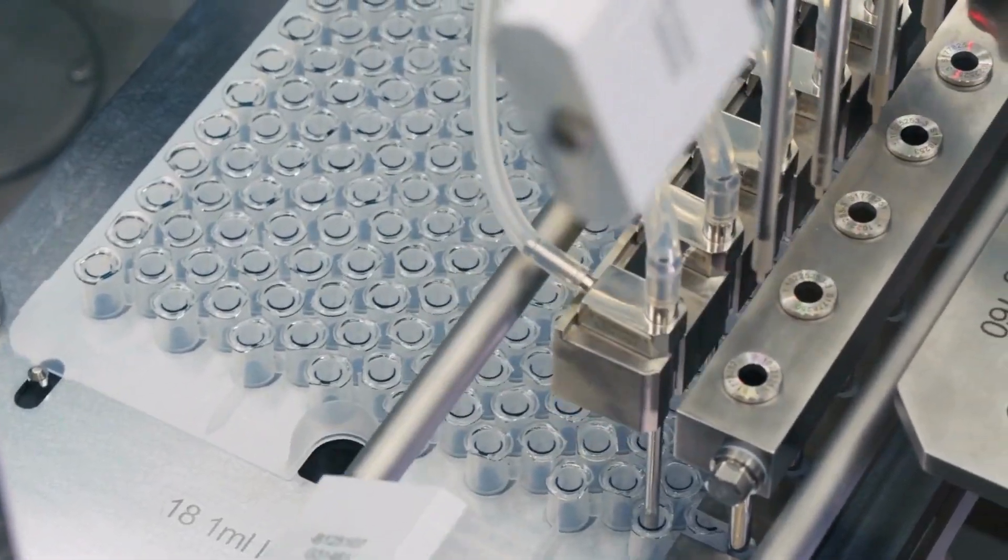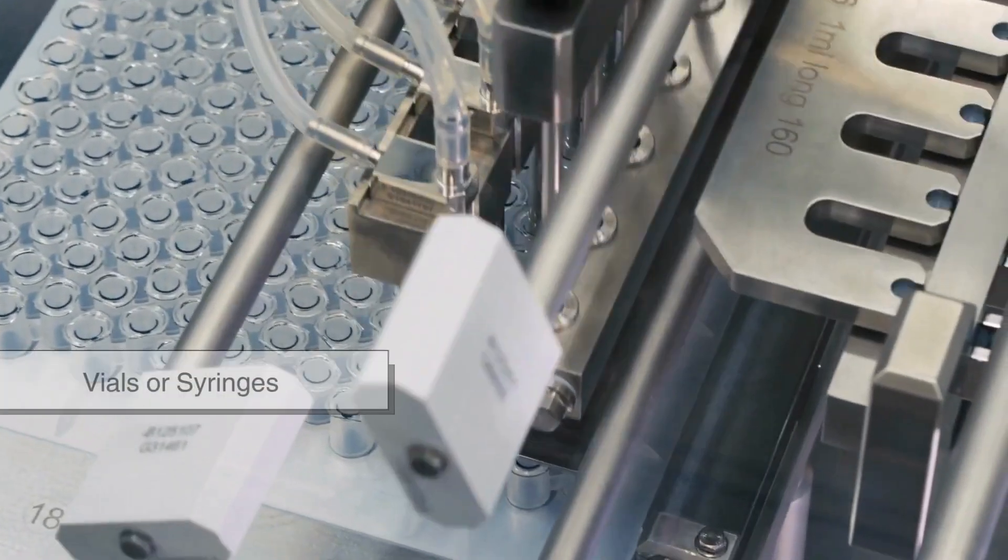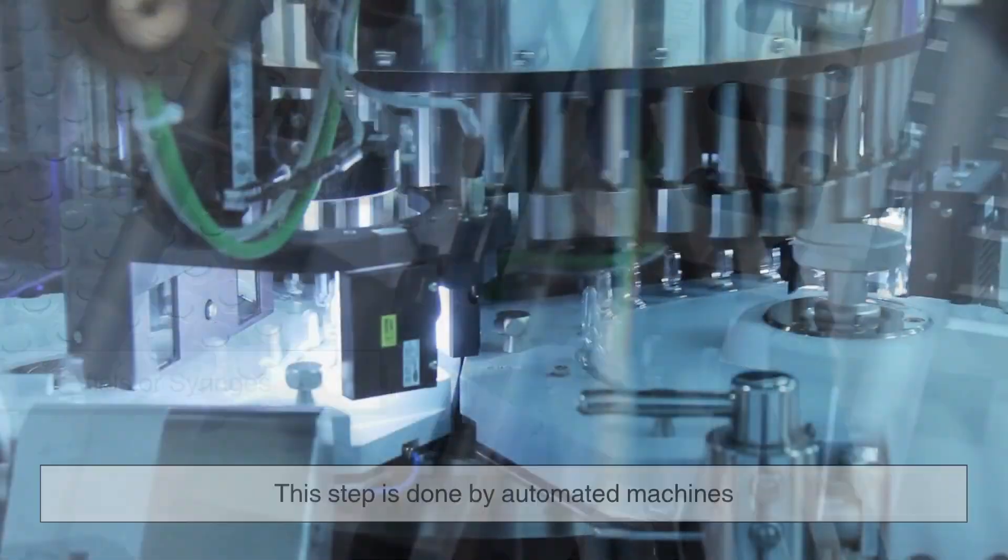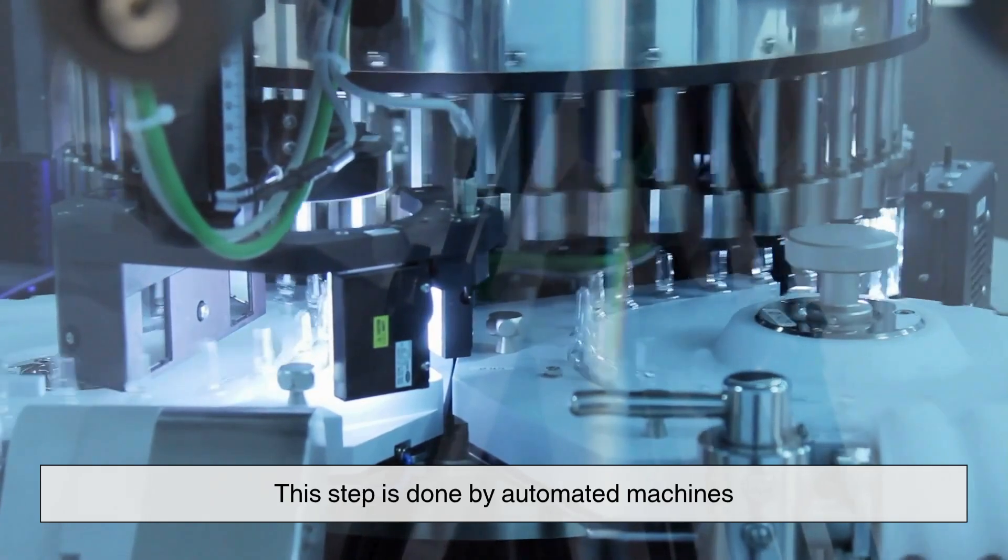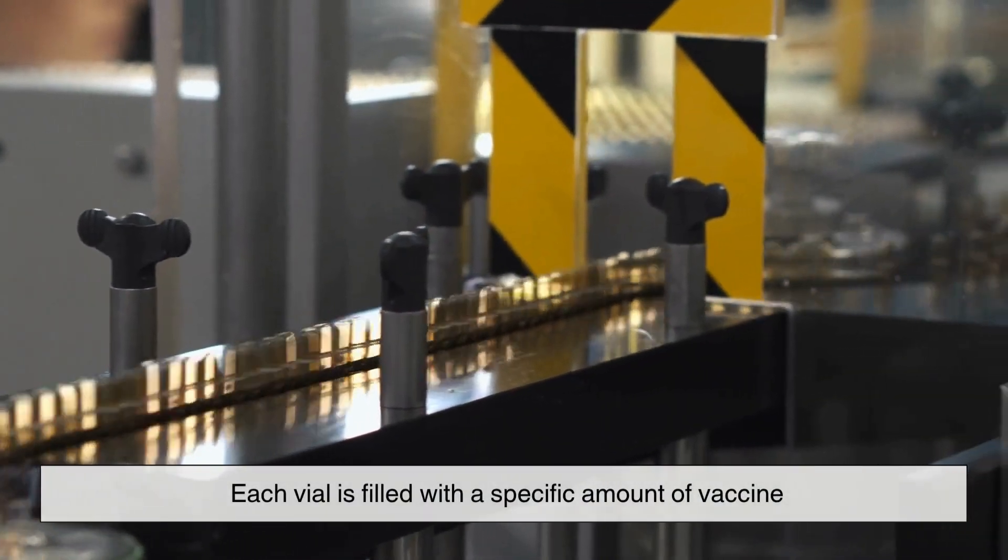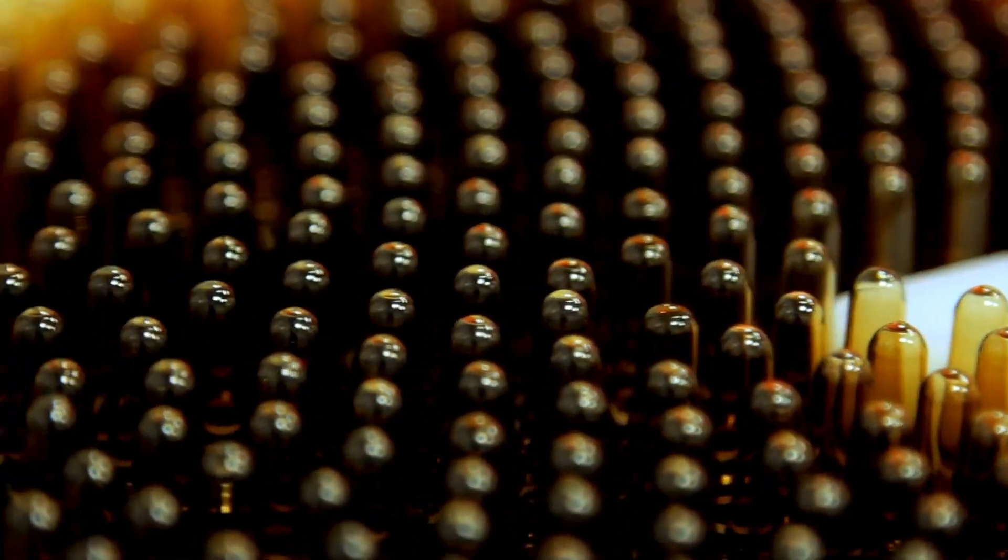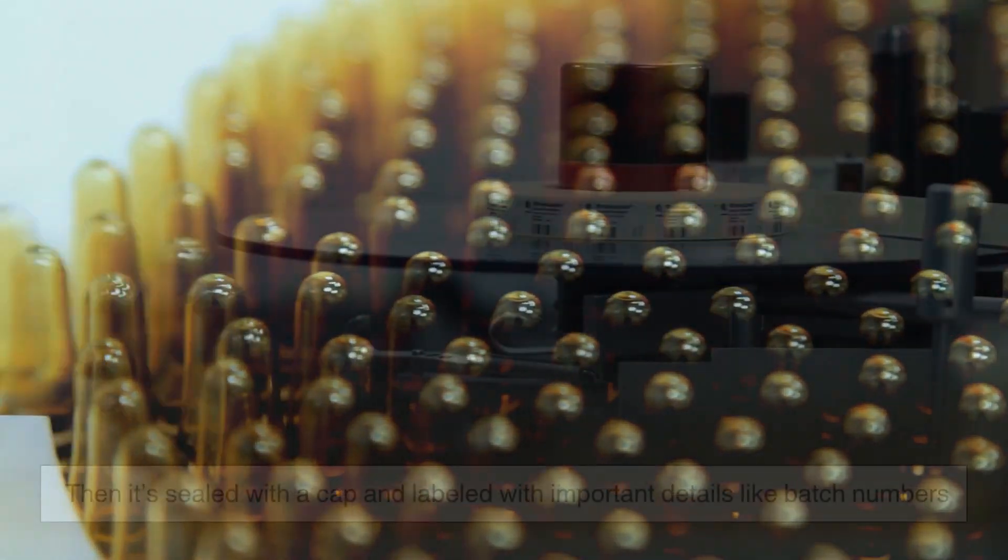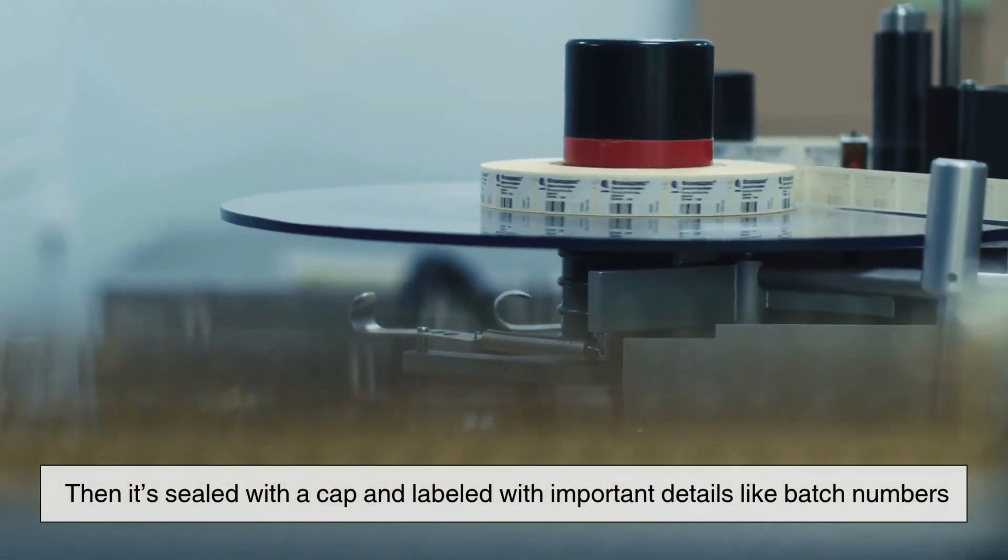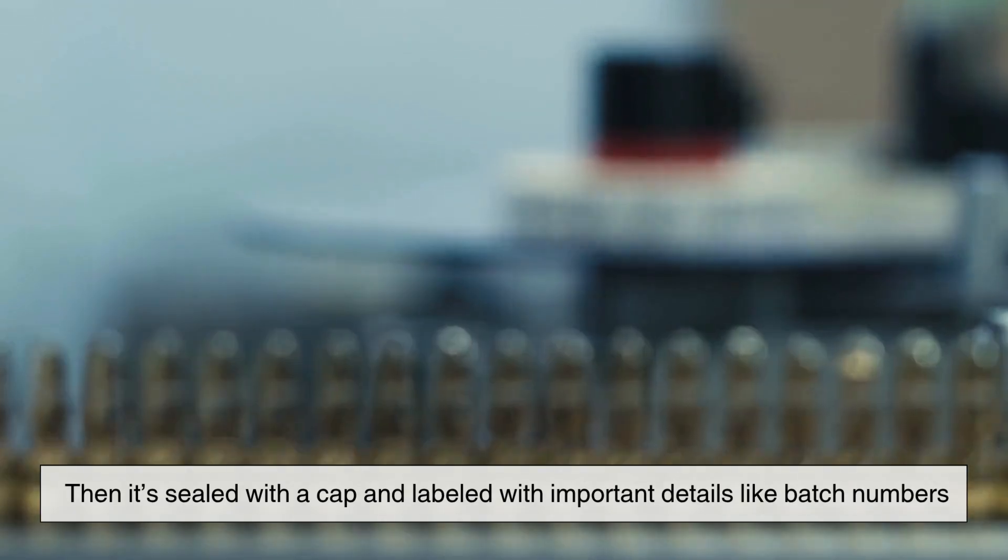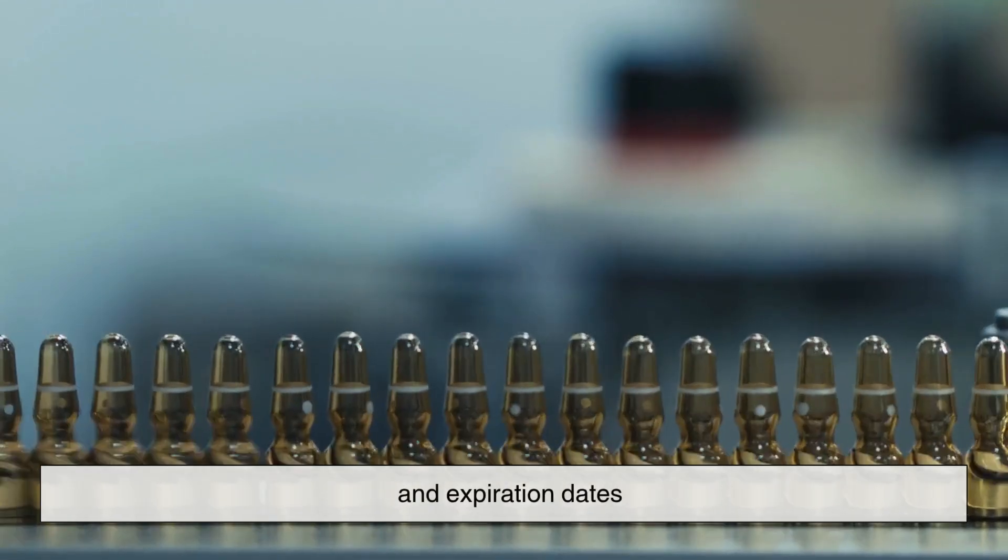Once the vaccine formula is ready, it's time to fill it into vials or syringes. This step is done by automated machines. Each vial is filled with a specific amount of vaccine, usually less than one milliliter. Then it's sealed with a cap and labeled with important details like batch numbers and expiration dates.